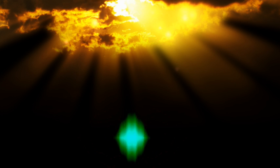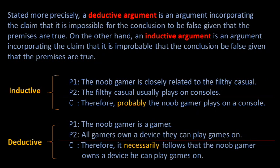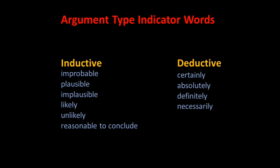However, we must acknowledge at the outset that many arguments in ordinary language are incomplete, and because of this, deciding whether the argument should best be interpreted as deductive or inductive may be impossible. The occurrence of special indicator words is illustrated in the examples we just considered. The word 'probably' in the conclusion of the first argument suggests it should be taken as inductive, and the word 'necessarily' in the conclusion of the second suggests it be taken as deductive. Additional inductive indicators are: improbable, plausible, implausible, likely, unlikely, and reasonable to conclude. Additional deductive indicators are: certainly, absolutely, and definitely.